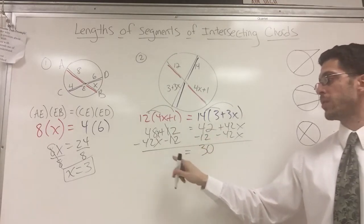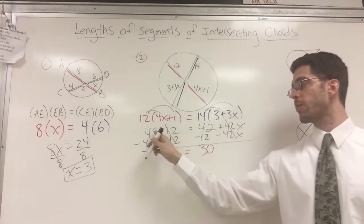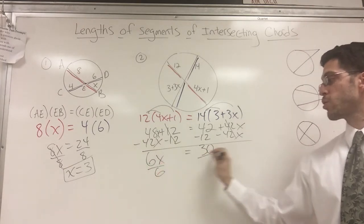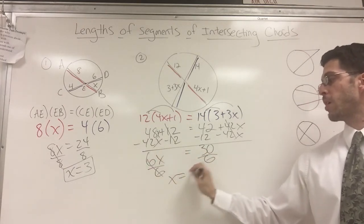Equal sign drops down. 42X cancels. 48X minus 42X is 6X equals 30. And smooth sailing from there.